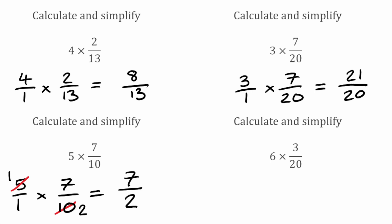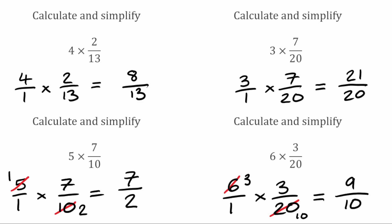For our last question, we've got 6 multiplied by 3 over 20. I'm going to write that 6 as 6 over 1, which I'm then multiplying by 3 over 20. Looking to see if we can cross-cancel: we can't cancel down the 1 and 3. However, we can cancel down the 6 and 20, because the highest common factor of 6 and 20 is 2. Dividing both by 2: 6 divided by 2 becomes 3, and 20 divided by 2 becomes 10. So now multiplying through: 3 times 3 is 9, and 1 times 10 is 10. So this one fully simplified would be 9 over 10.